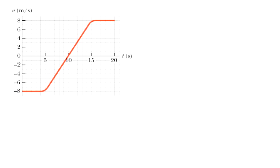This question asks: the velocity versus time graph for an object moving along a straight path is shown in the figure below. Find the average acceleration of this object during the following time intervals — it gives us three different time intervals for part one: zero to five seconds, five to fifteen seconds, and zero to twenty seconds.